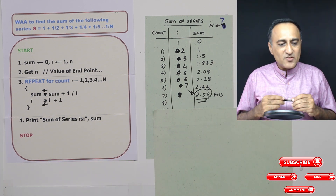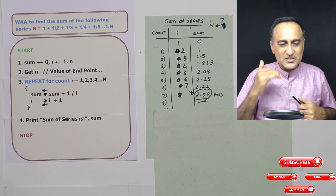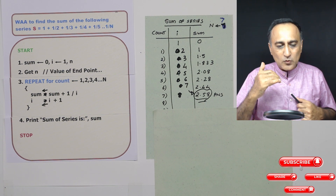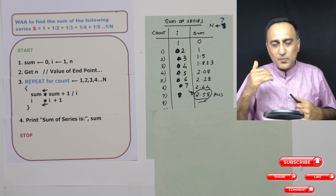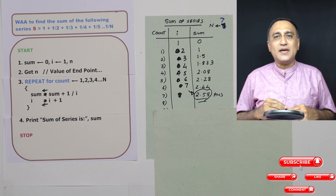So I hope this gives you an understanding of the sum of the series from 1 to 1 upon n based on the value of n. Example 3 — let's go.